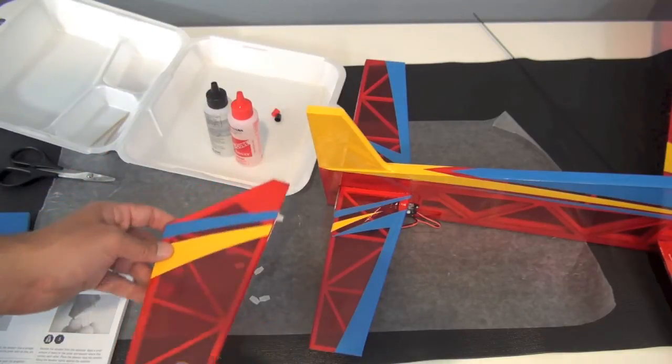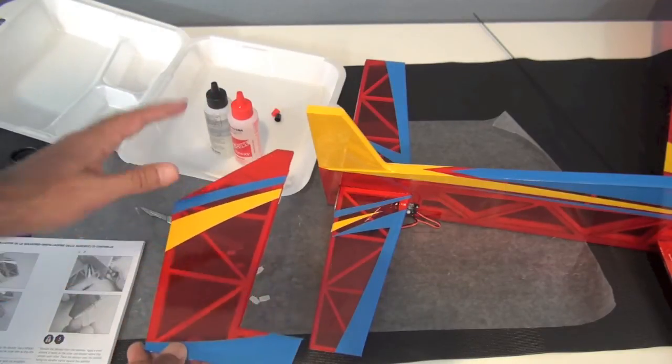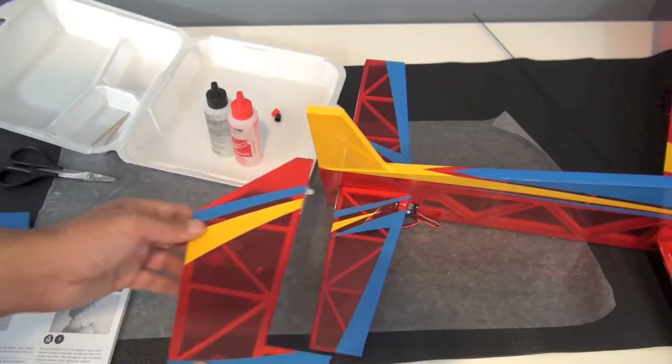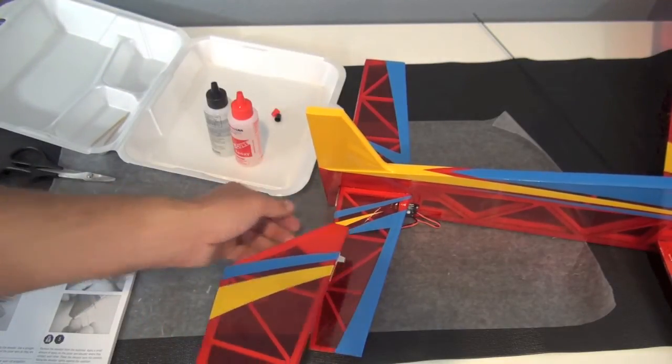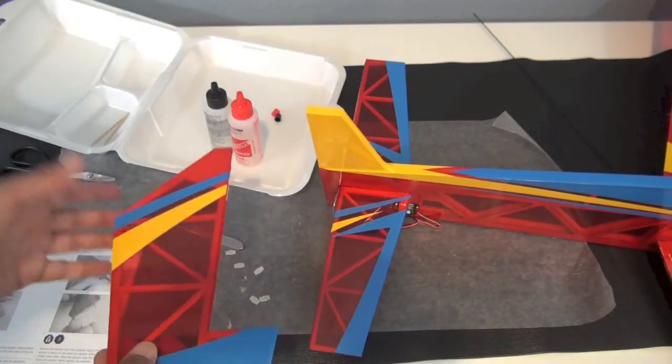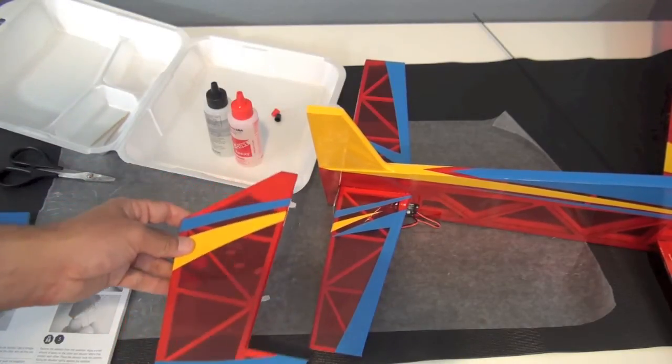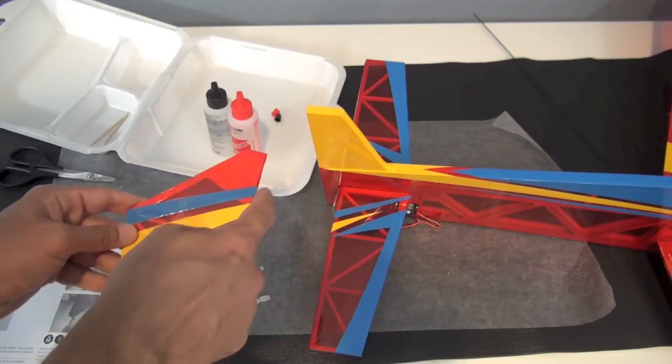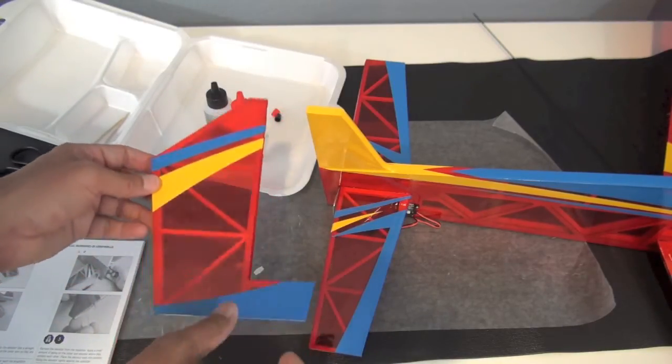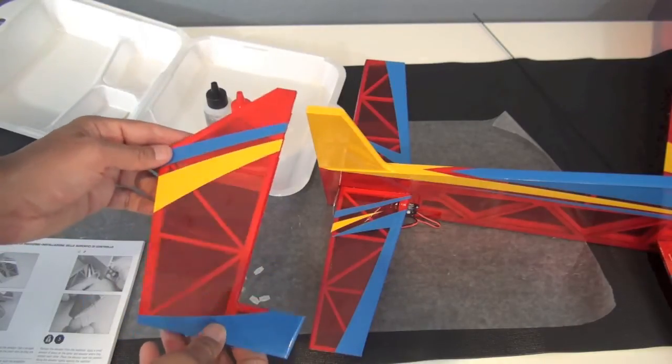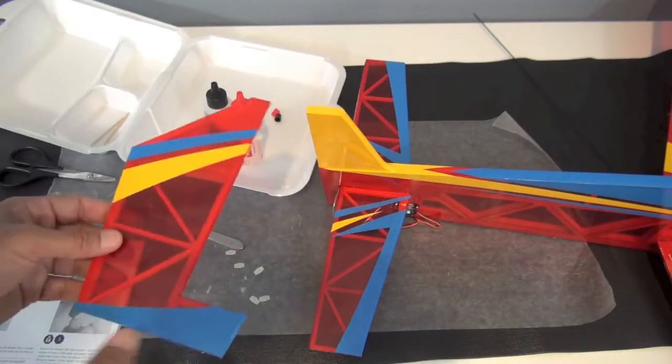Before you glue anything, once it's tack glued, just make sure everything is lined up nicely. And once you like that, back everything out, put the epoxy on the elevator joiner, and then slide everything back in. It's five minute epoxy, so you got a little bit of time to work things around. And then once you like it, drip more CA into the hinges to complete the glue joint, and then you're all set.